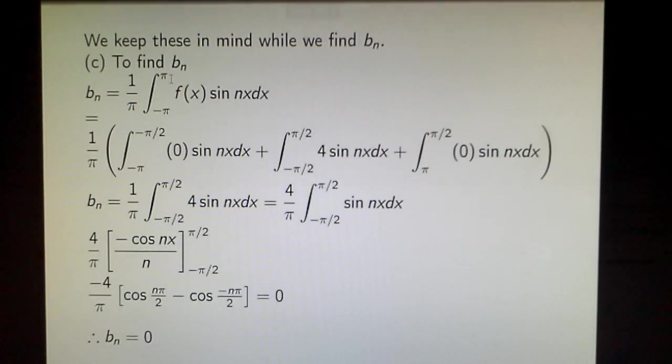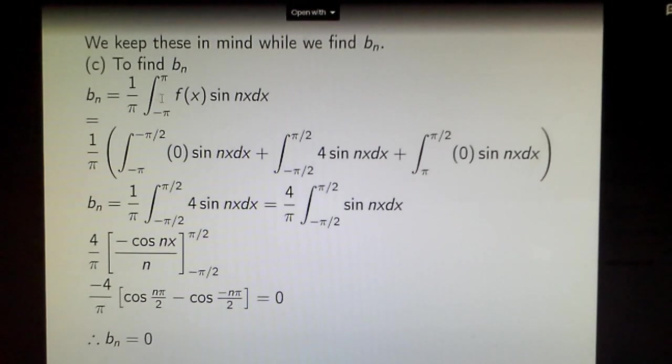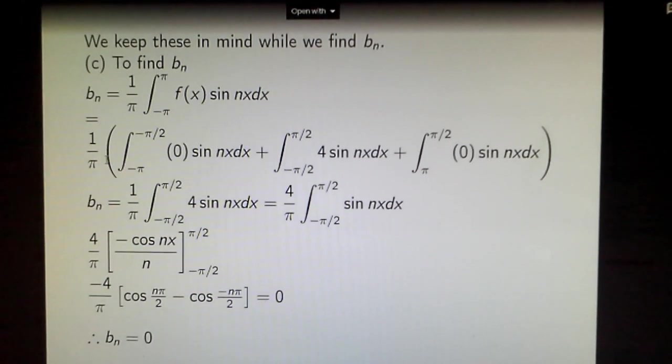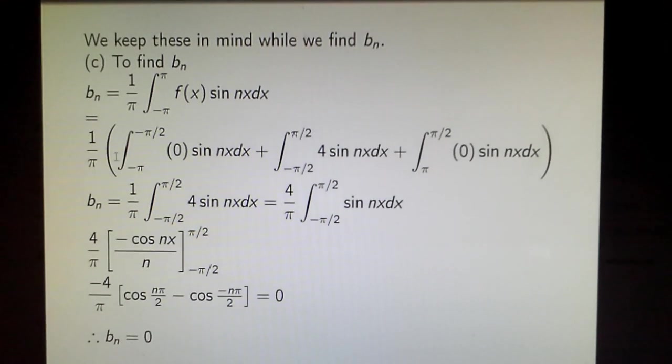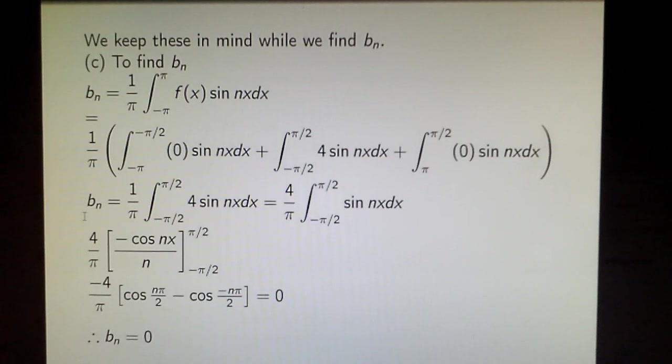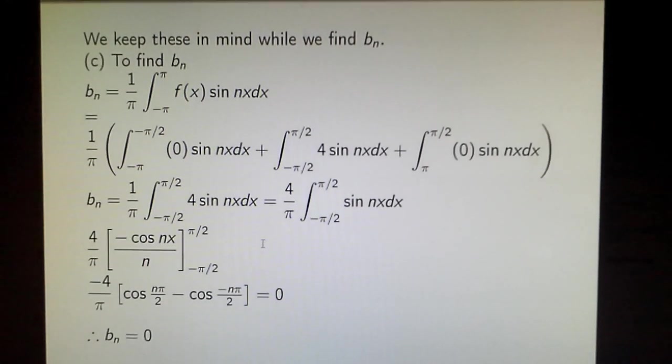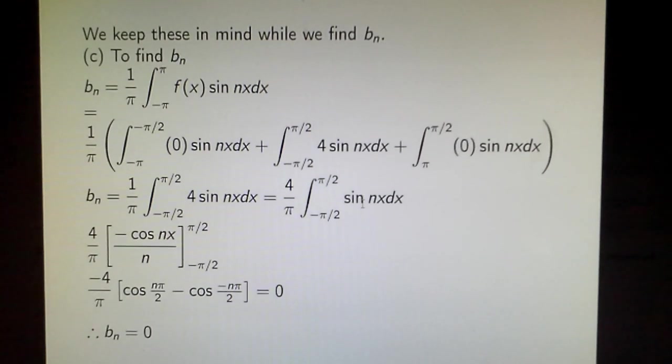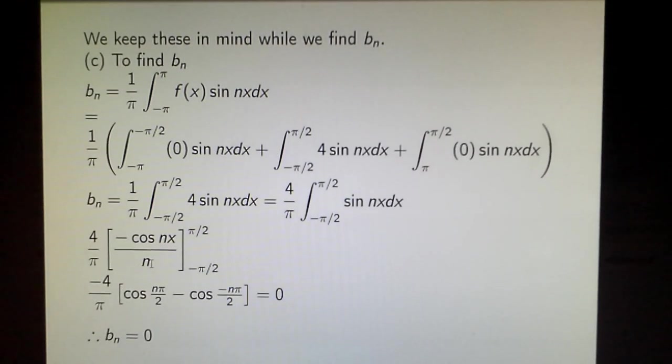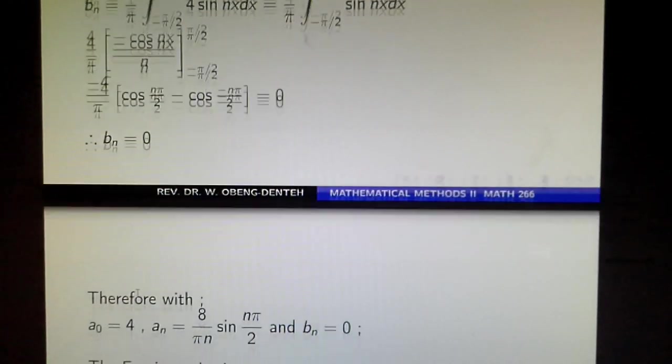solve for b_n using the expression b_n = (1/π)∫f(x)sin(nx)dx. Going back to the figure, we write this down within the various intervals. We integrate, and simplifying, we integrate sine to get -cos(nx)/n. Putting in the limits gives us 0, so b_n = 0.